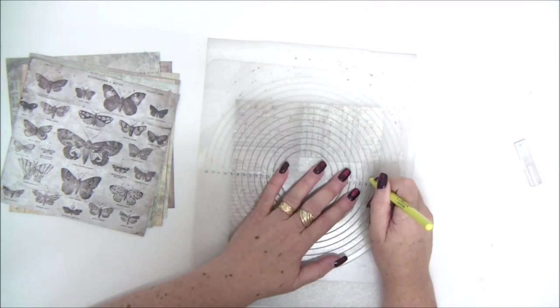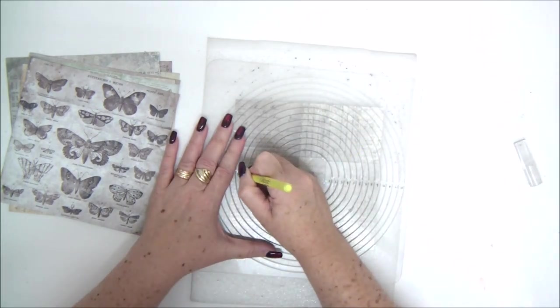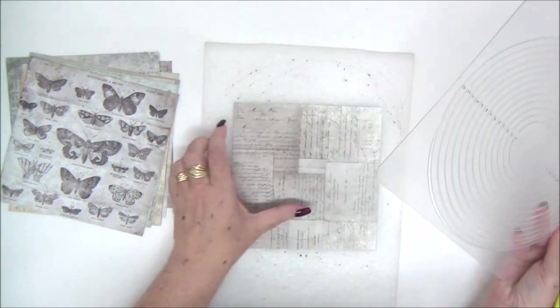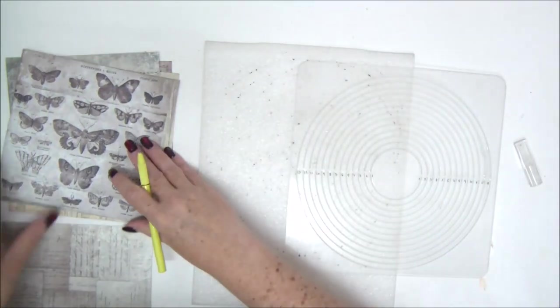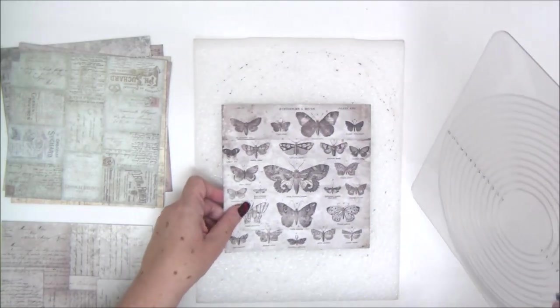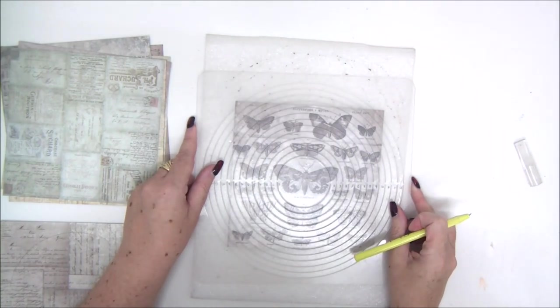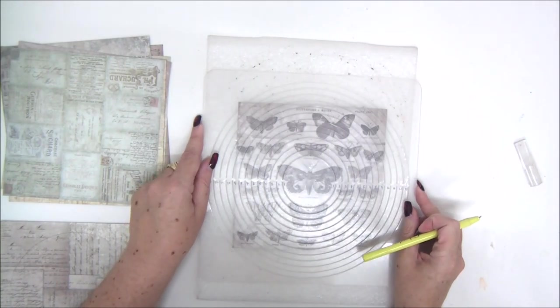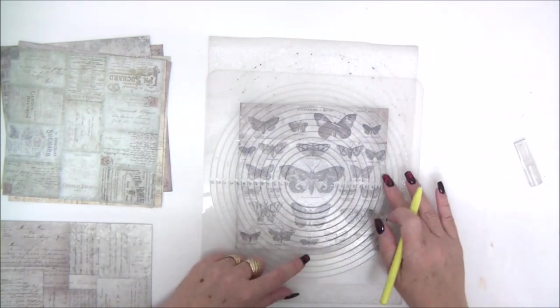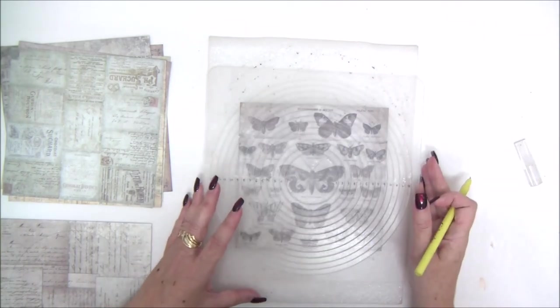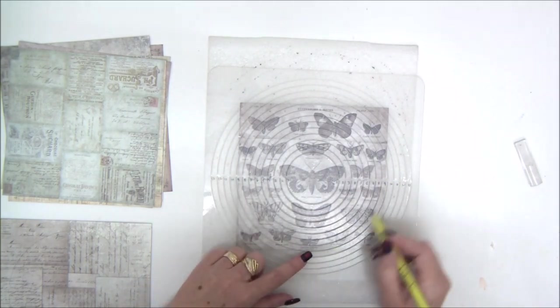You get to decide how large the first circle is. I like to leave at least a quarter of an inch or an inch gap between the edges of the circle and the edges of the paper. Once you've cut your larger circles, the other circles get smaller and smaller. I do about a quarter of an inch difference between each circle.